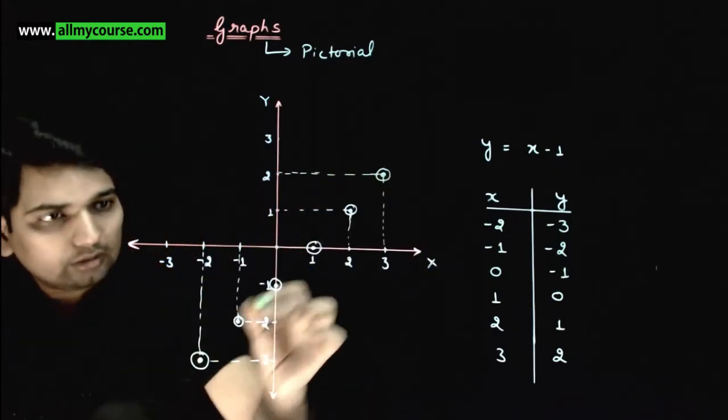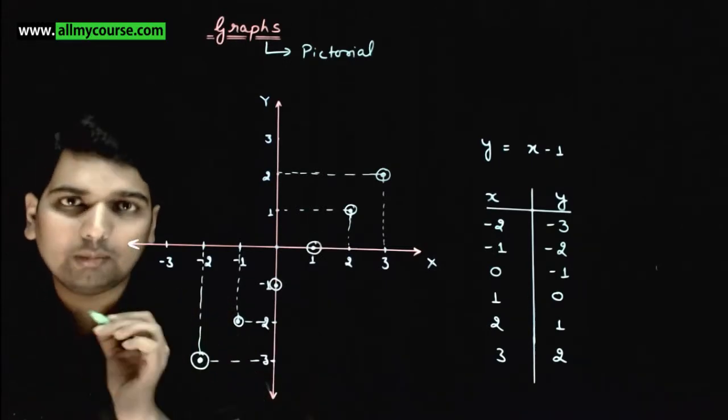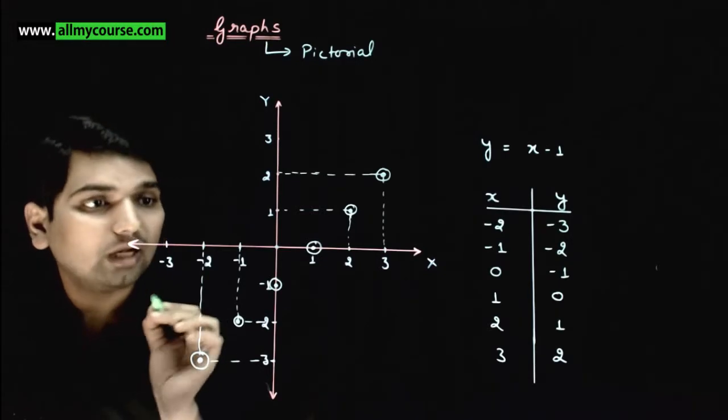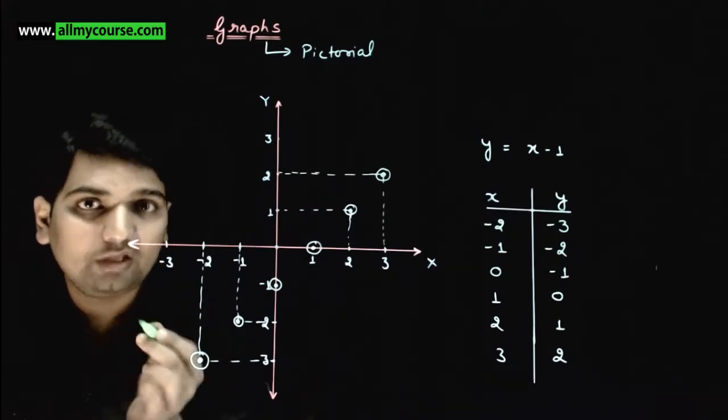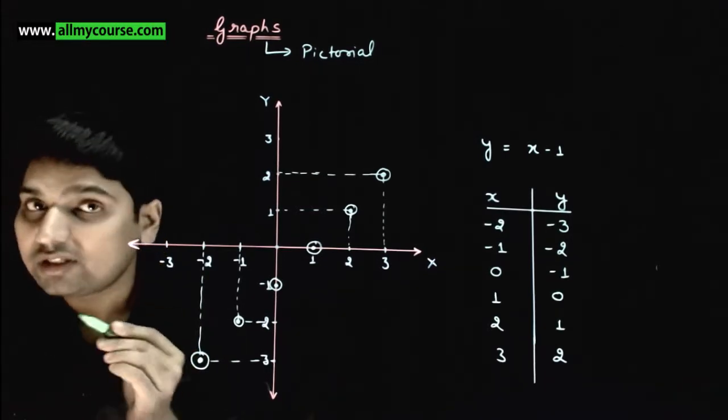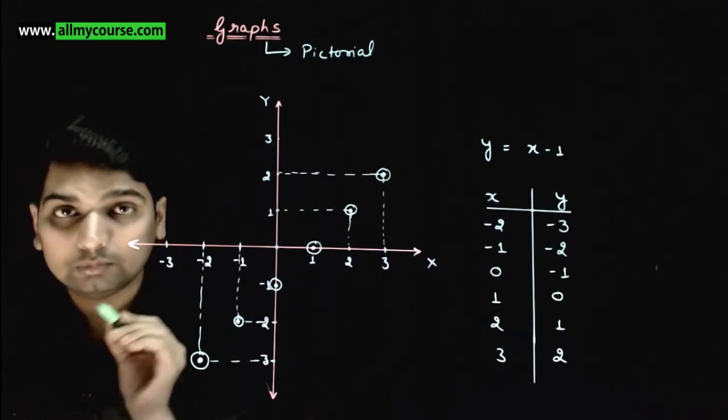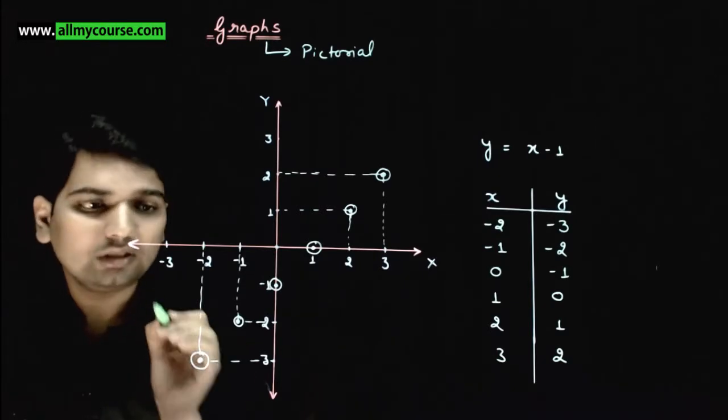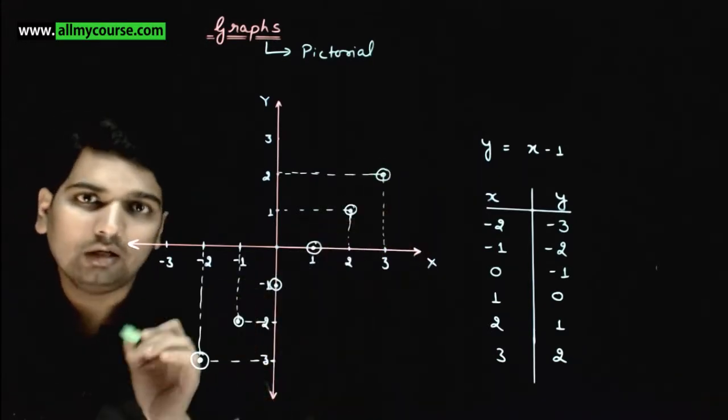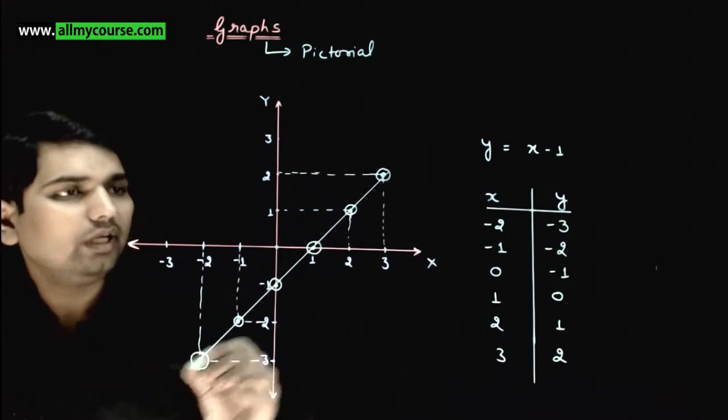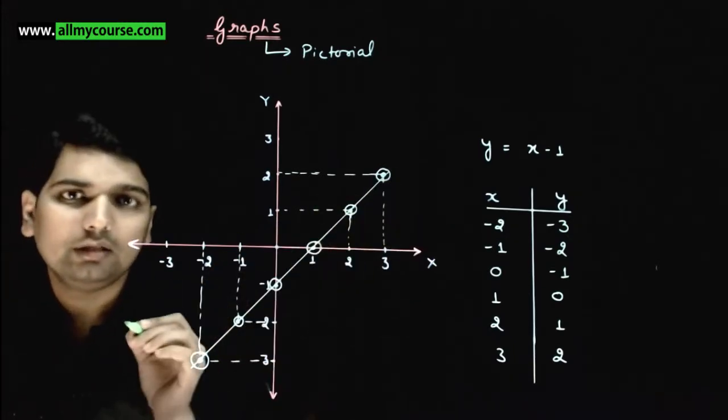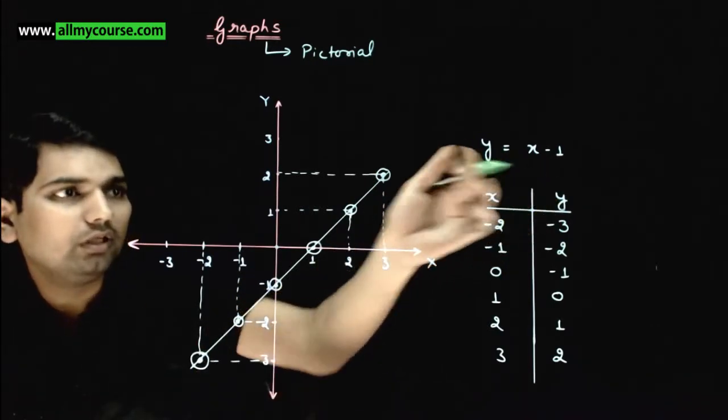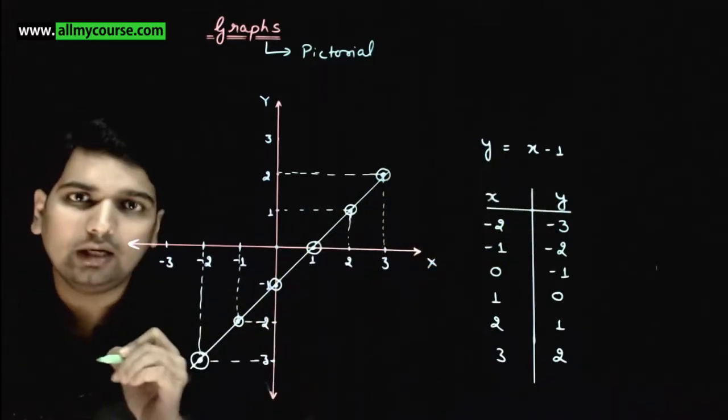So these are the points through which our graph should pass. How are we going to plot this graph? See, this graph can be a straight line or sometimes a curve line. But in this case, it's a straight line. So we will join these points directly with a straight line. This is our graph corresponding to the equation y is equal to x minus 1.